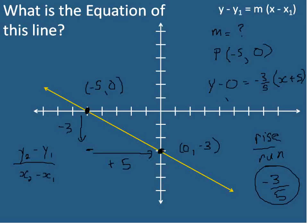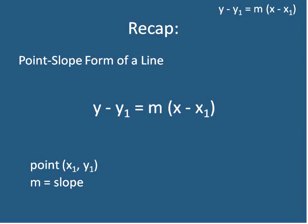I can rewrite that simply as y equals negative 3 over 5 times x plus 5, since you wouldn't normally write y minus 0. That's our equation in point-slope form for this line. Quick recap: the point-slope form is y minus y1 equals m times x minus x1. Find the slope, find a point on the line, and you can use either the slope equation or the rise-over-run method with two points to build your equation.